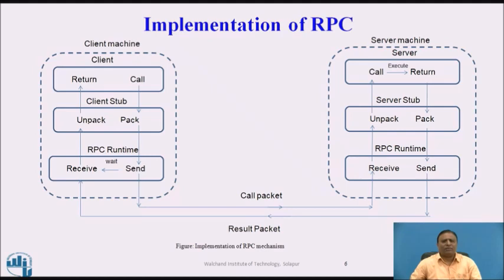Client Stub: The client stub is responsible for carrying out two tasks. First, on receipt of a call request from the client, it packs a specification of the target procedure and arguments into a message and then asks the local RPC runtime to send it to the server stub. Second, on receipt of the result of procedure execution, it unpacks the result and passes it to the client.